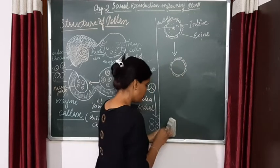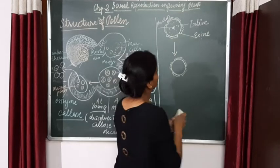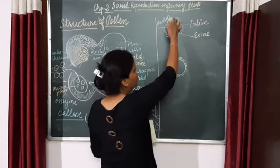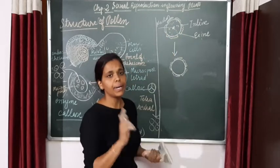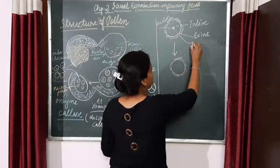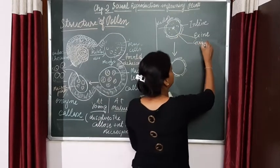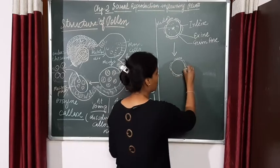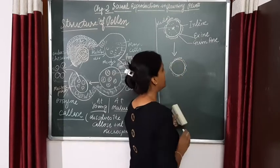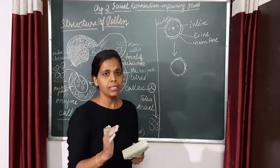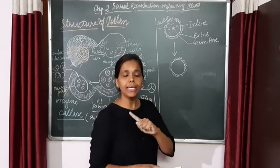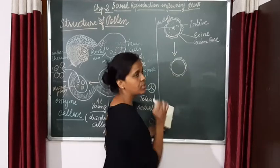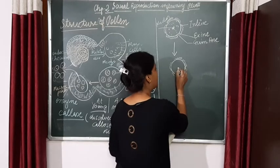You must notice that I am leaving a gap over here. The whole microspore is not surrounded by exine — so this is called as a pore or aperture. These portions where the exine is missing, it means no sporopollenin is going to be present over there.